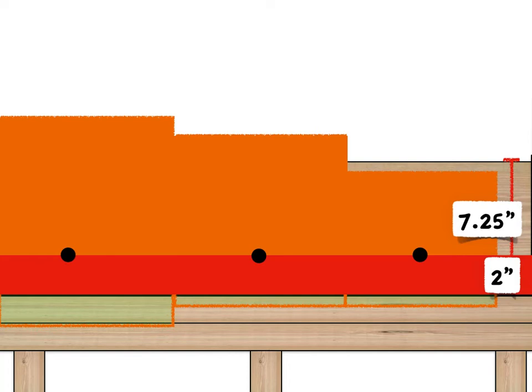So what we're going to do is lower the ledger so that the lower fastener can't go any lower on the band joist because of the red. But it also can't go any higher on the ledger because of the orange.